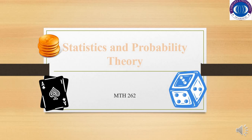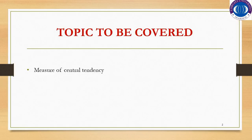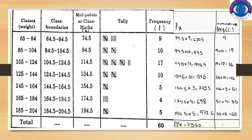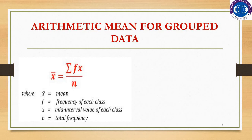Bismillahirrahmanirrahim. This is the second part of the fourth lecture of the course Statistics and Probability Theory. We will continue with the topic measures of central tendency. In the previous lecture we discussed how to find the mean, median, and mode for ungrouped data. In this lecture we will discuss how to find the arithmetic mean, median, and mode for grouped data.